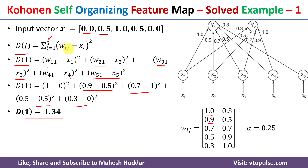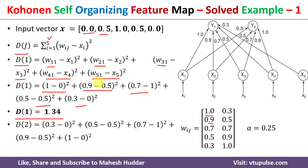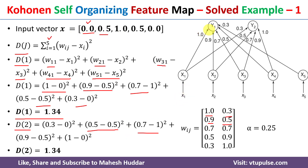Similarly, we calculate D(2) by replacing j with 2, with i going from 1 to 5. The components become (0.3 minus 0)², (0.5 minus 0.5)², (0.7 minus 1.0)², and so on. Solving gives D(2) equal to 1.34. So D(1) equals D(2) equals 1.34 — the Euclidean distances from the input vector to both clusters Y1 and Y2 are equal.